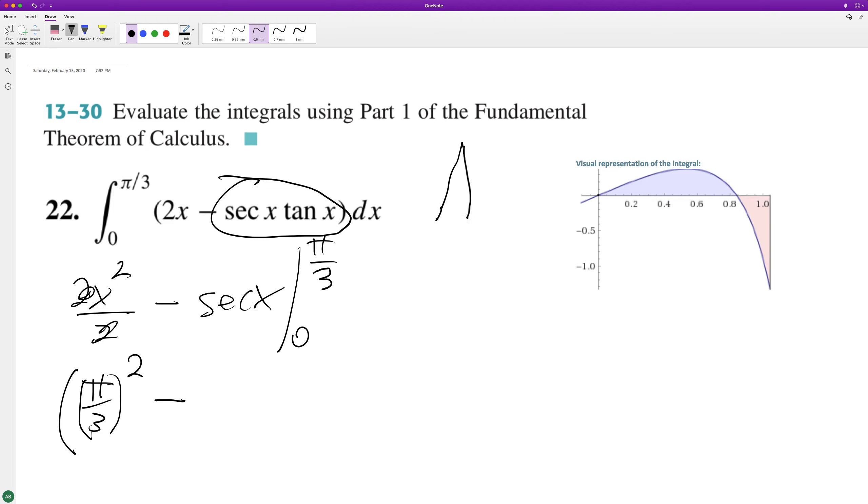Oops, pi over three is right here. Secant's the same thing as one over cosine. So this is one, this is two, so it's going to be two. And then minus zero, and then the secant of zero is equal to one.